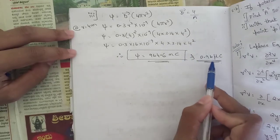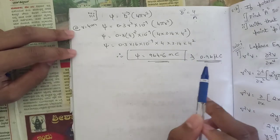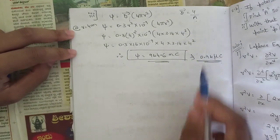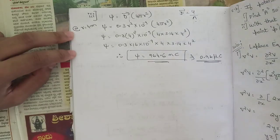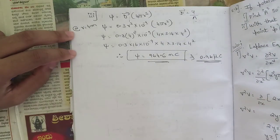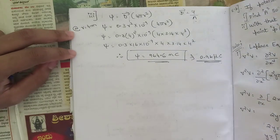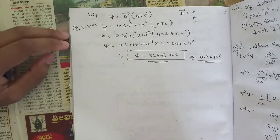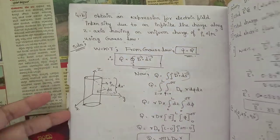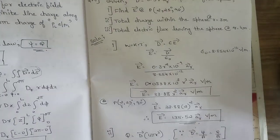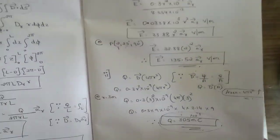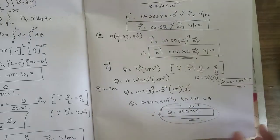The final answer for electric flux ψ coming out of the sphere is 964.6 nano coulomb, or equivalently 0.96 micro coulomb — both are the same. This completes the solution for all three sub-questions. Please pause the video and note it down.